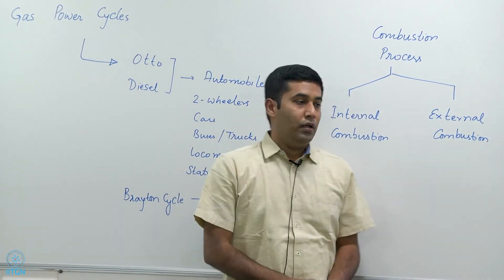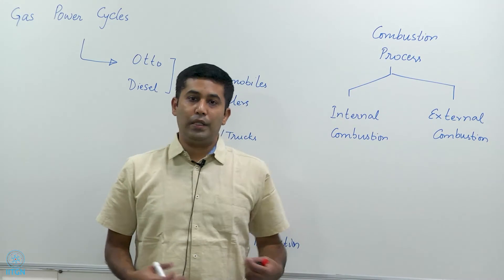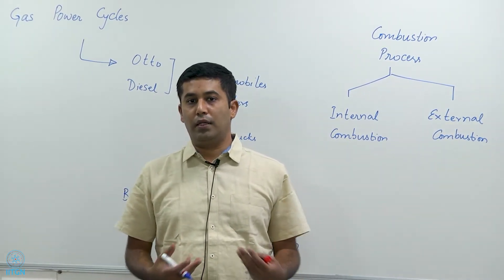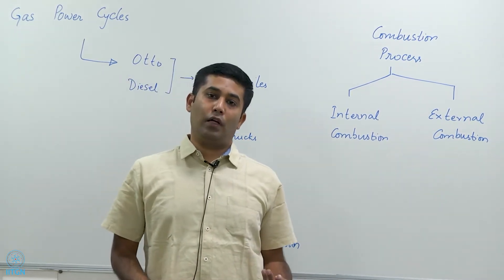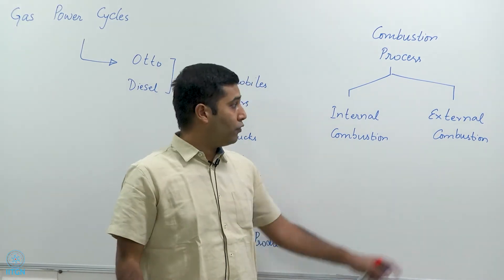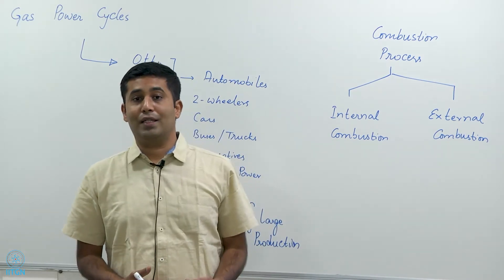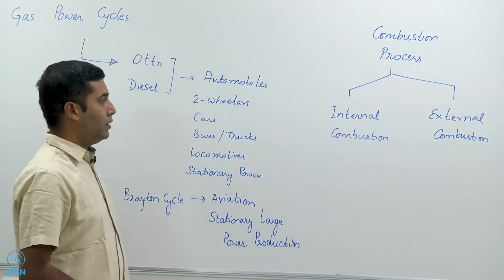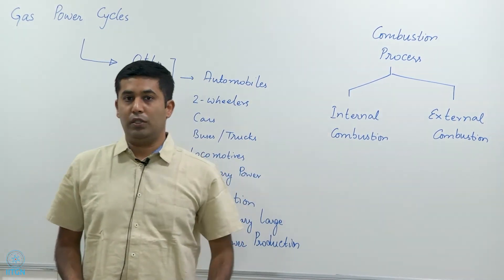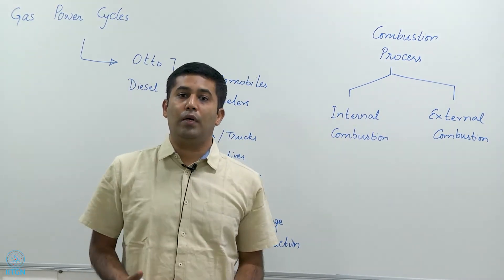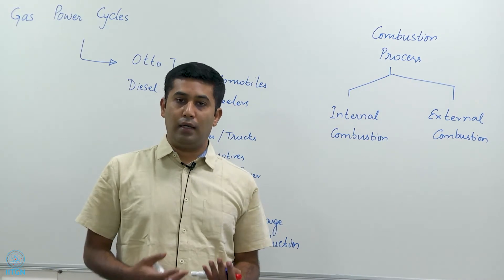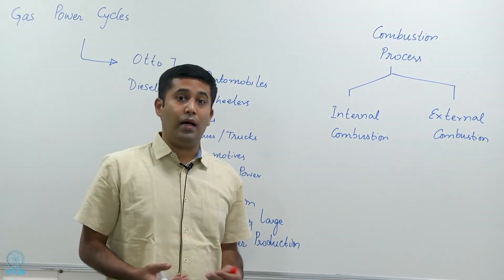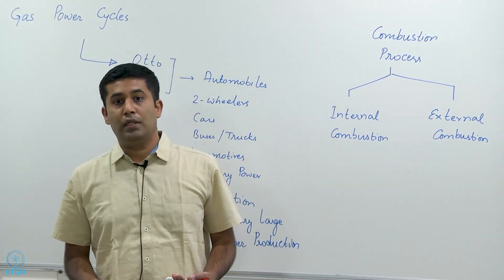The Rankine power cycle is an example of external combustion because the combustion was external to the working fluid — coal was burned in air, but the coal-air burnt gases never mixed with the water, which was the working fluid. In the Otto cycle, diesel cycle, and Brayton cycle, it is internal combustion, which means the gas actually undergoes a chemical reaction — for example, air and fuel react and release a lot of energy. So our motorbikes, cars, and gas turbines are actually internal combustion engines.